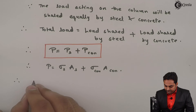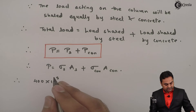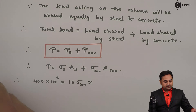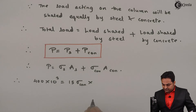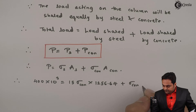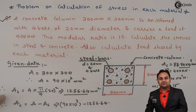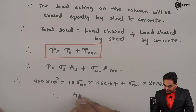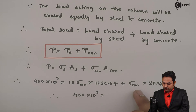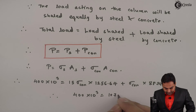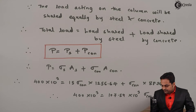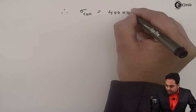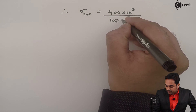Therefore, total load 400 × 10³ = (15 × σ_c × 1256.64) + (σ_c × 88.74 × 10³). Adding up the values — there is only one unknown, σ_c — we get 400 × 10³ = 107.59 × 10³ × σ_c. Therefore, stress in concrete = 400 × 10³ / 107.59 × 10³.